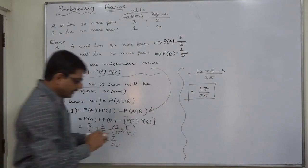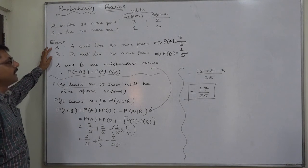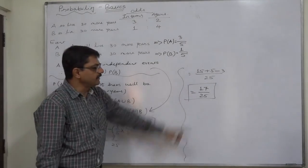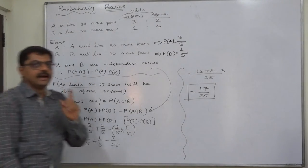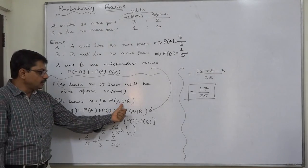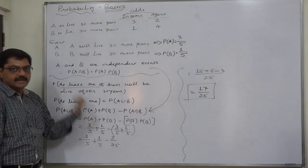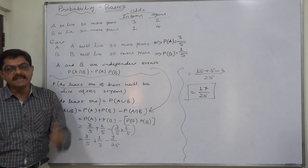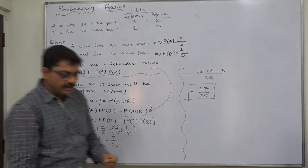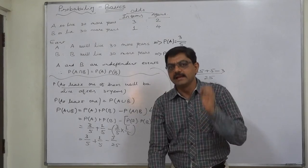So the probability that at least one out of A and B will be alive after 30 years comes to 17/25. To use the addition theorem for the purpose of calculating the probability of at least one is the easiest possible way, though we can calculate it in many other ways as well.